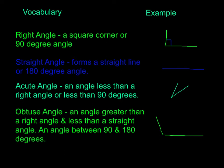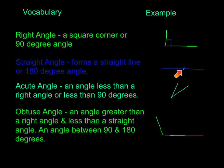A straight angle is like a straight line. It forms a straight line, or a 180-degree angle. The vertex joins here, goes this direction, and goes this direction — it's a straight line, 180 degrees in measurement.